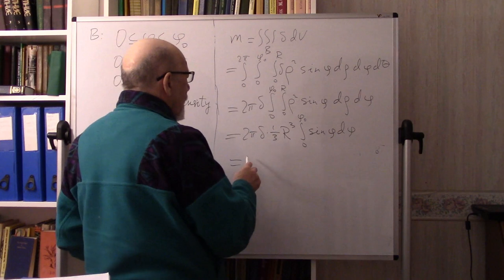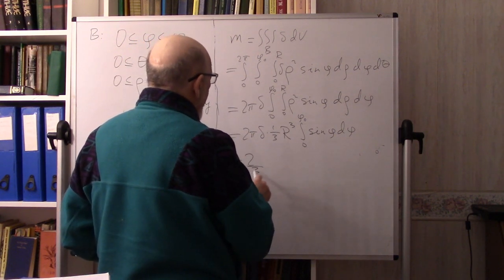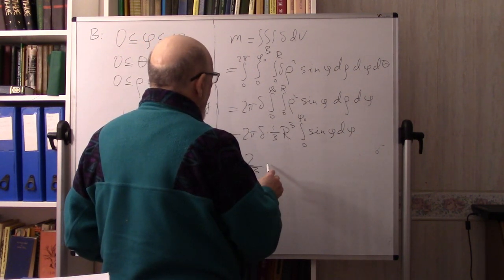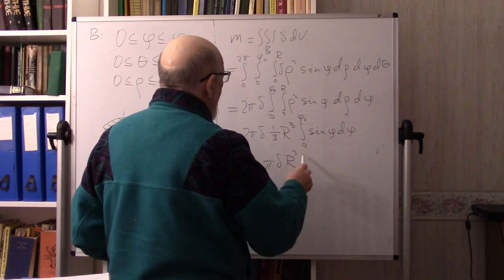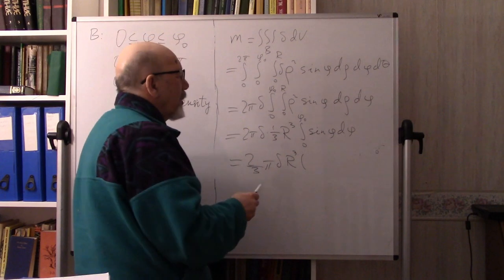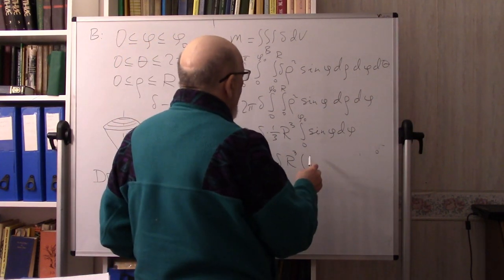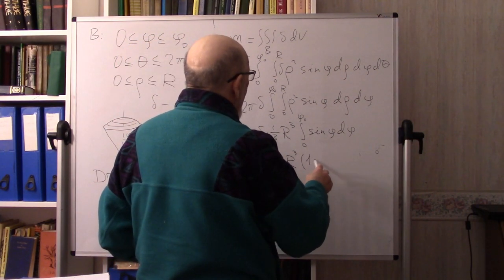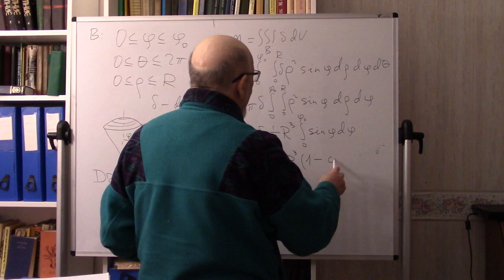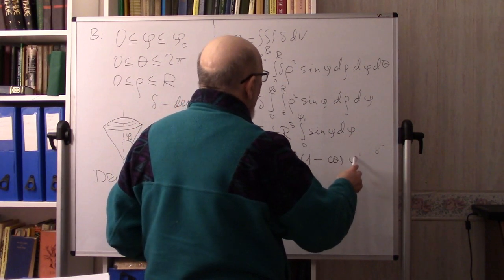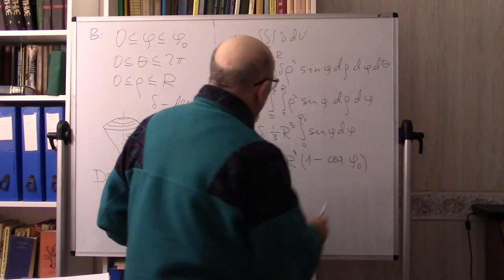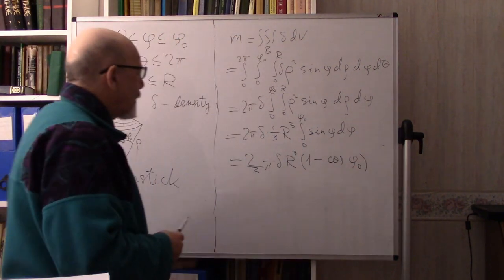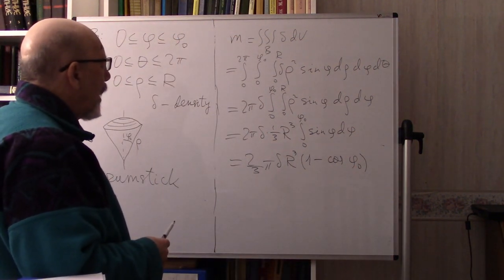This equals (2/3)πδR³ times (1 − cos φ₀), since the integral of sin φ gives minus cosine evaluated from 0 to φ₀.